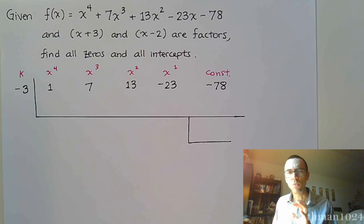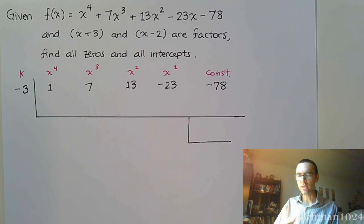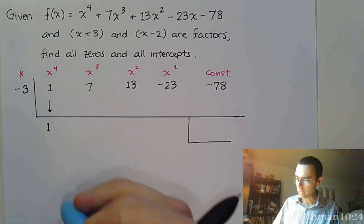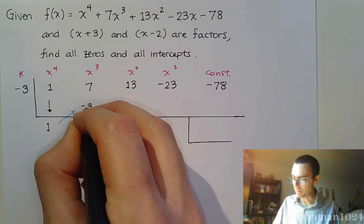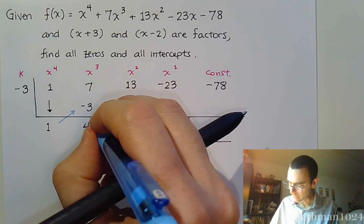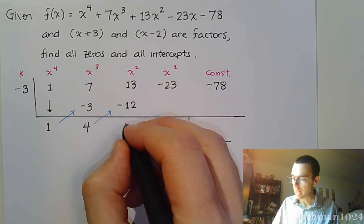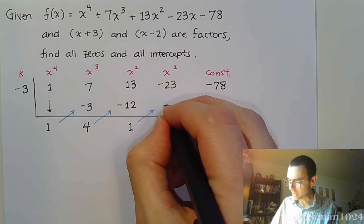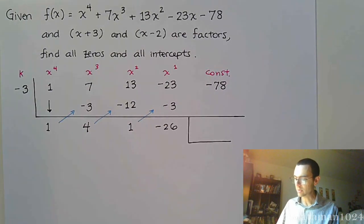After we do one pass through here with synthetic division, it's going to go from degree 4 to x to the 3rd. This is not going to be new to us. So bring down the 1, and do what we've been doing. Multiply times the k value of negative 3, so we get negative 3. Combine to get 4. Multiply times k to get negative 12. Add to get 1. A couple more times here, so we get negative 3. That gives me negative 26.